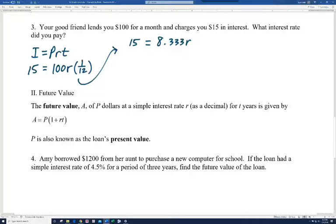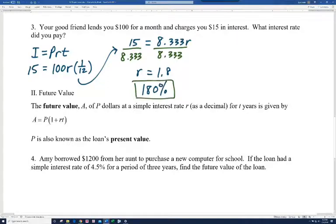So we're going to solve for R. We need to get R by itself by dividing both sides by 8.33. And you get about 1.8. And so remember, this is an interest rate. When we change 1.8 to a percent, we get 180%.